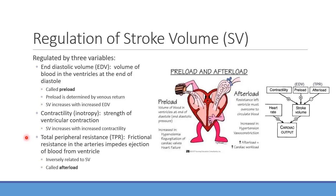Afterload is essentially mean arterial pressure — the resistance to blood flowing out of the ventricle. During systole, you're trying to overcome the pressure in the aorta to pump blood out and open the semilunar valves. Increased afterload decreases stroke volume; decreased total peripheral resistance increases stroke volume.